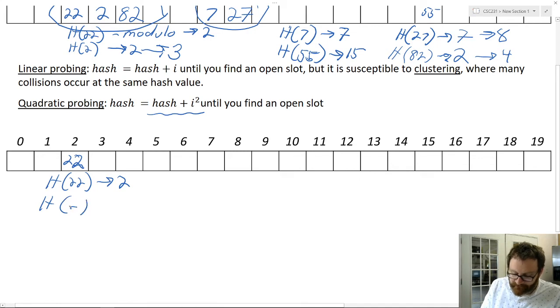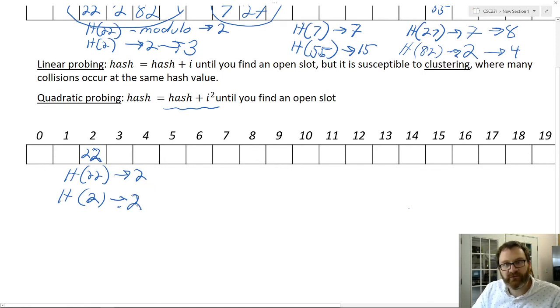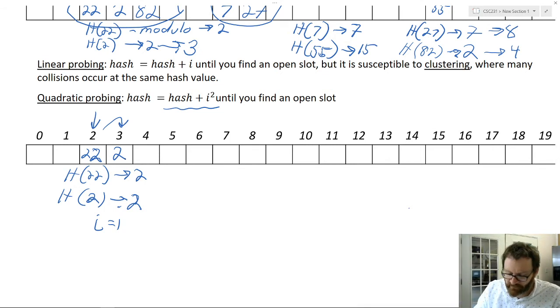So quadratic probing: hash equals hash plus i squared until you find an open slot. So let's hash 2. Where is it going to go? Well, initially, it wants to go to 2 again. But 2 is occupied. So where does it go? It goes to hash plus i squared. So what's the i? i is going to be the number of times that you rehash the thing. So initially, i is going to be 1. So hash plus i, hash plus 1, is going to be 3. So we only jump to here to begin with. Not a big improvement. They're still side by side.